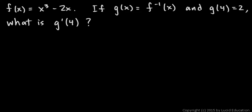In this problem f of x is equal to x cubed minus 2x. If g of x is equal to the inverse of function f and g of 4 is equal to 2, what is g primed of 4?